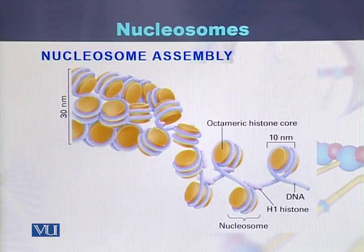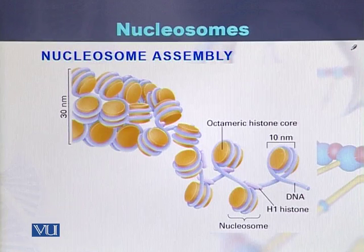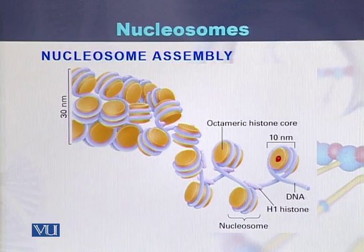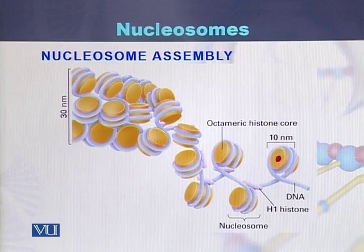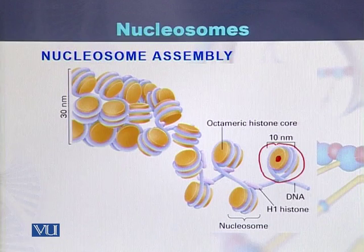Here is the diagram of the nucleosome. We can see a ball which consists of 8 molecules of histones — 2 molecules each of H2A, H2B, H3, and H4. DNA is wrapped around these 8 molecules of histones, and this structure is called a nucleosome.